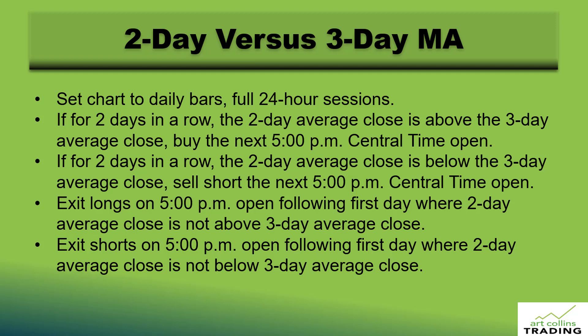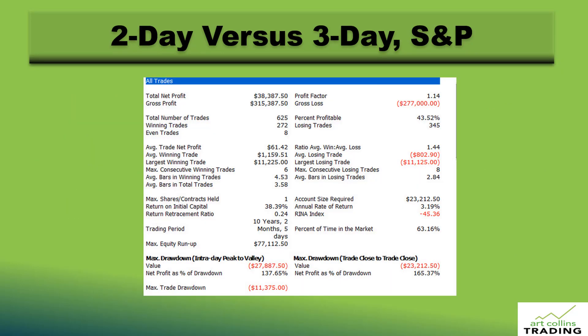So it takes a couple of days to get in, and the first sign that the signal is not persisting in your direction, you get out. From 2010 through May 15th of 2020, this is what you get: $38,000 on 625 trades, 43% profitable, $61 average trade.